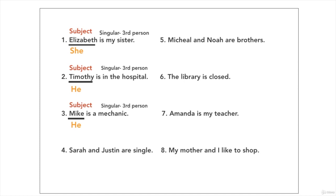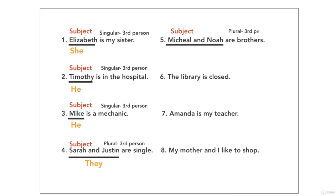Number four: Sarah and Justin are single. Sarah and Justin are the subjects. They are plural — there are two people. It is third person — they. Number five: Michael and Noah are brothers. Michael and Noah are the subjects. It is plural, there are two people, third person — they.